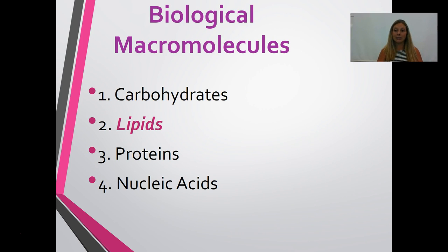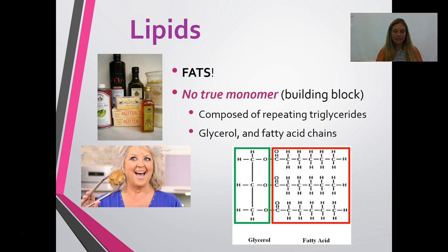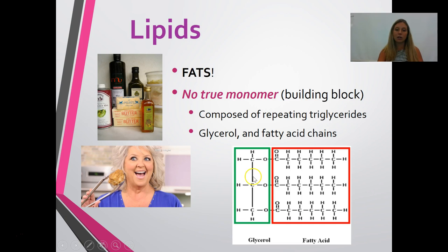Now let's talk about lipids. When you hear lipids, think fats. Unlike the other macromolecules, lipids don't have a true repeating subunit, but they're all made up of the same parts — triglycerides. A triglyceride is composed of a glycerol and fatty acid chains. A lipid is a long chain or group of triglycerides put together.